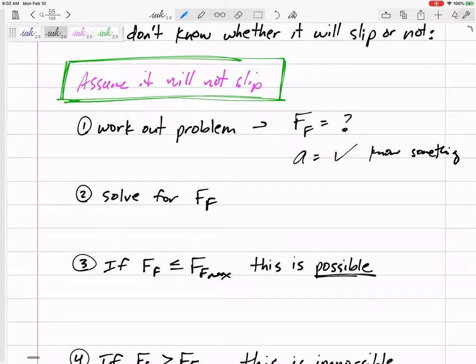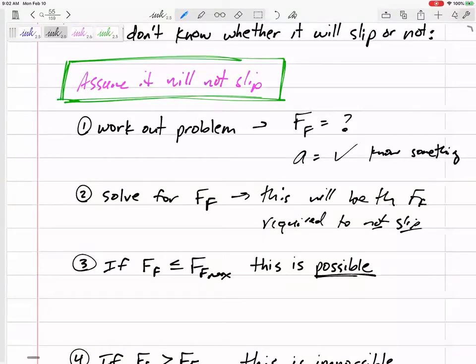Then solve for the force of friction. This will be the F_F required to not slip - the force of friction that makes your assumption correct.